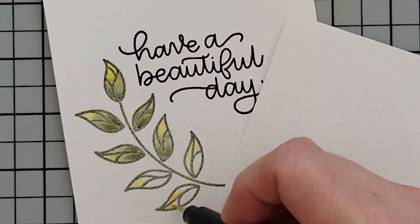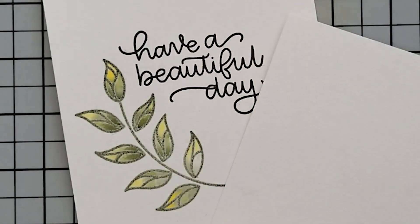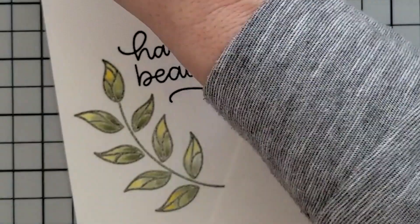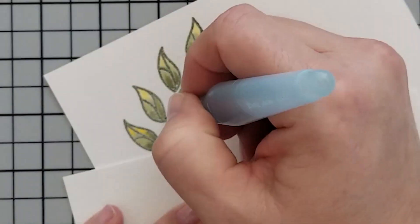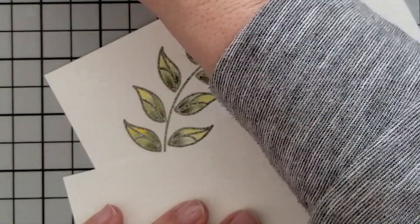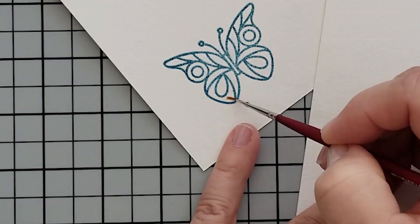I filled the leaves in with Pistachio and then came in with the Olive Grove to add a little bit of shading to the very bottom of those leaves. It's nothing real complicated. This is a great way for you to start out with the watercolor effect. It's so easy to do this with these Memento inks.